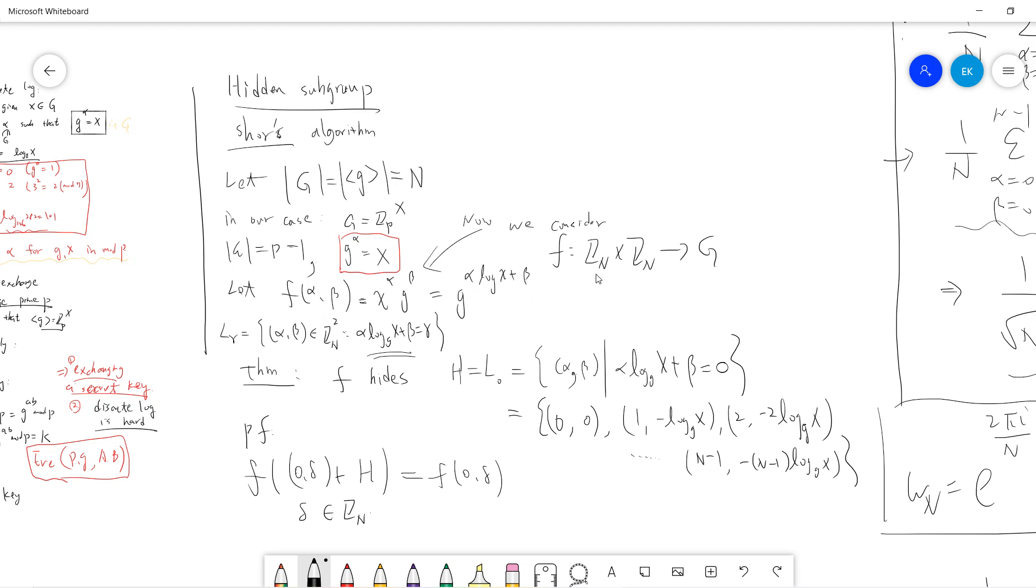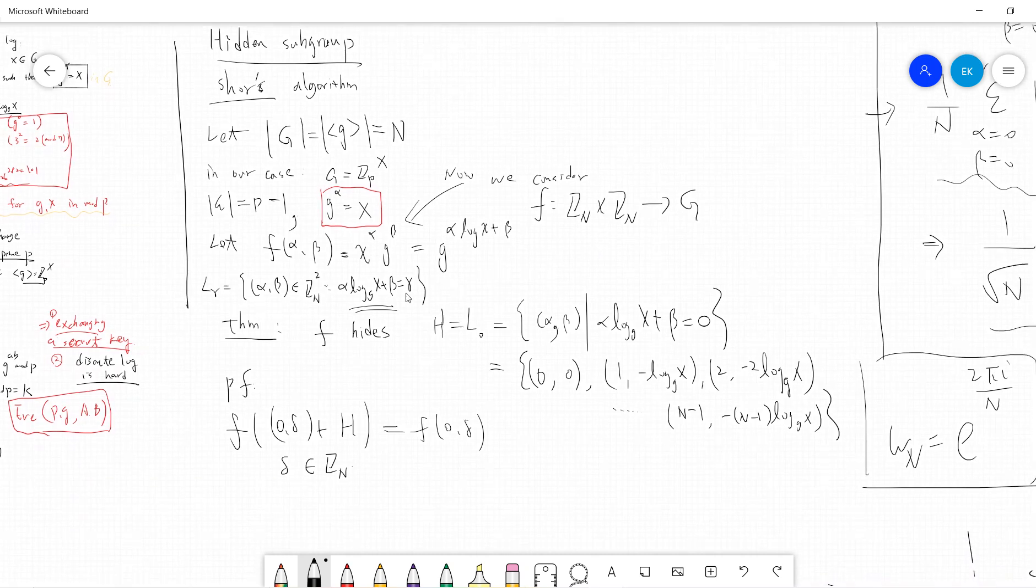Define L_gamma as a subset of Z_n cross Z_n, where alpha log x plus beta equals gamma. The theorem says there is obviously - you see if L_gamma, any point rising L_gamma will give the same f because this is gamma.